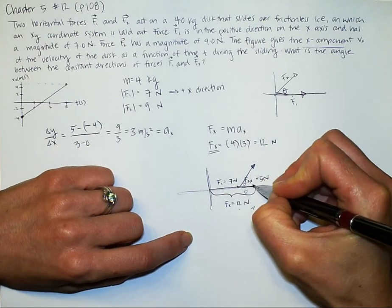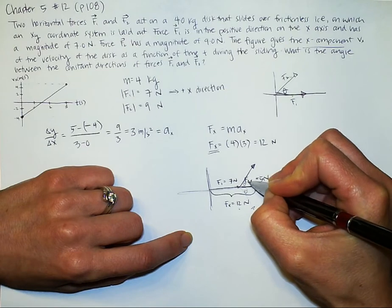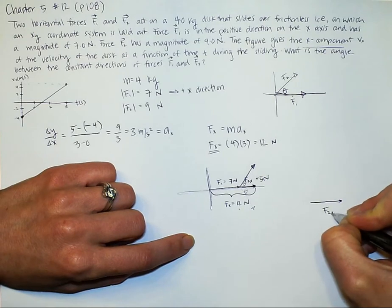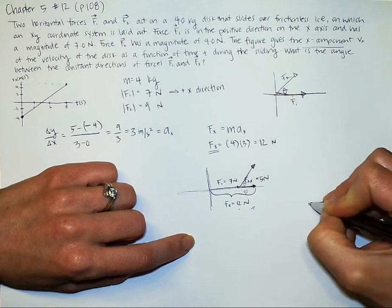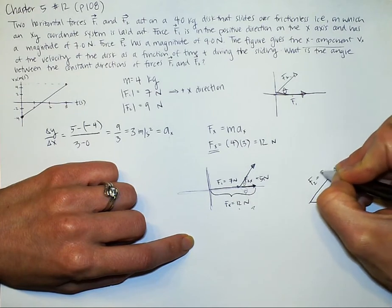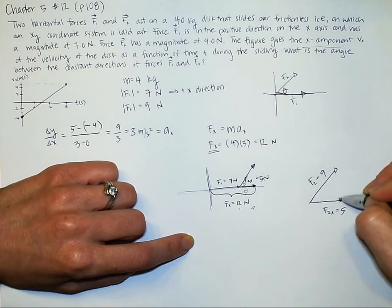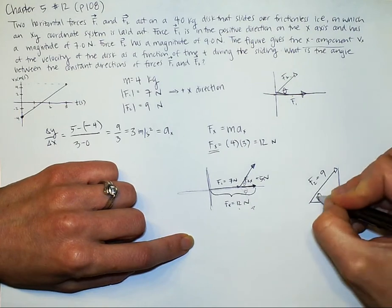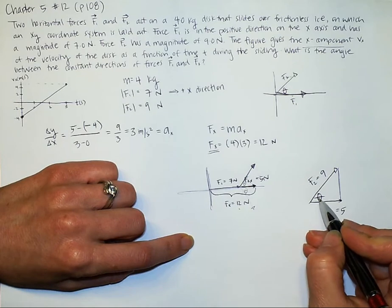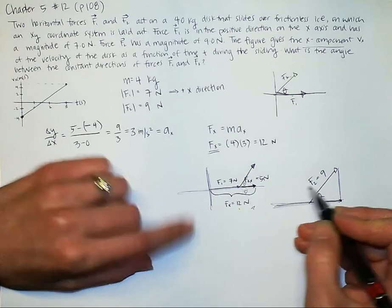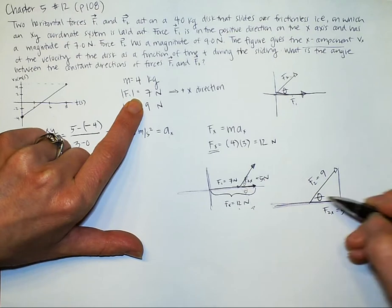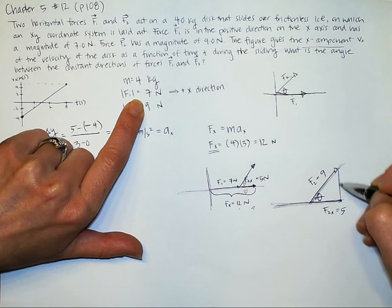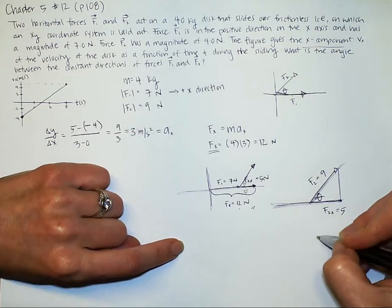If I have 5 newtons for force 2 in the x direction, let me draw this over here. So here's force 2 in the x direction. That equals 5. I know that my force 2 in total equals 9. I could solve for my force 2 in the y direction, but I actually don't need to because all I really want to know is what is this angle theta between this x direction force of F1 and this direction of the force F2. Fortunately, we already have a right triangle drawn here.